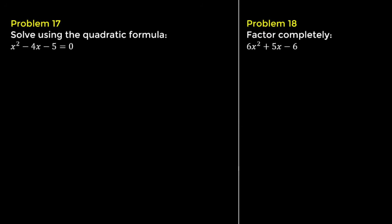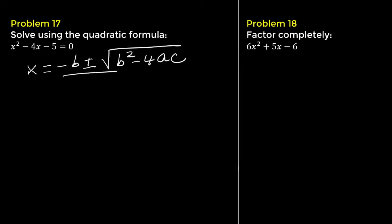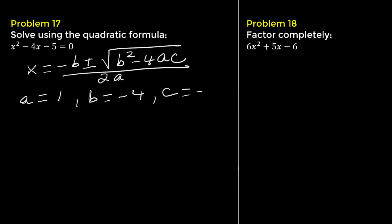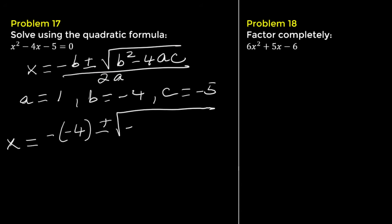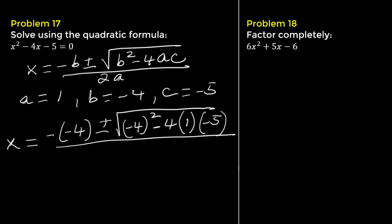Problem 17. Solve x squared minus 4x minus 5 equals 0 using the quadratic formula. The formula is x equals negative b plus or minus the square root of b squared minus 4ac, all over 2a. We know a equals 1, b equals negative 4, and c equals negative 5. Substituting, we get negative negative 4 plus or minus the square root of negative 4 squared minus 4 times 1 times negative 5, all over 2 times 1.